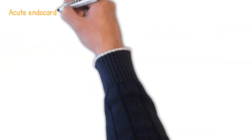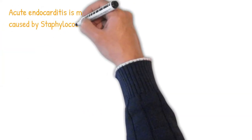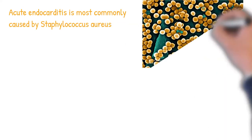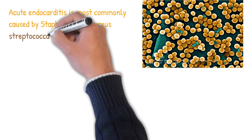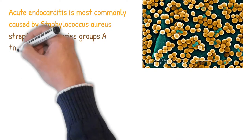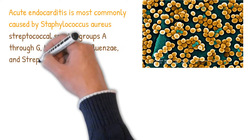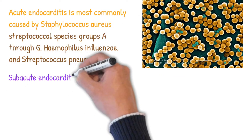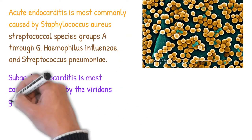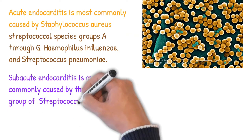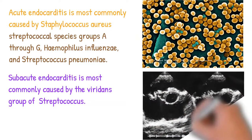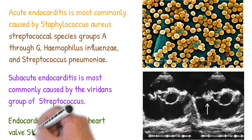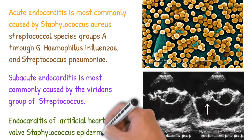Acute endocarditis is most commonly caused by Staphylococcus aureus, usually the methicillin-resistant strain, streptococcal species groups A through G, Haemophilus influenzae, and Streptococcus pneumoniae. Subacute endocarditis is most commonly caused by the viridans group of streptococcus. Endocarditis of an artificial heart valve is caused by Staphylococcus epidermidis.